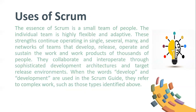The essence of Scrum is a small team of people. The individual team is highly flexible and adaptive. These strengths continue operating in single, several, many, and networks of teams that develop, release, operate, and sustain the work and work products of thousands of people. They collaborate and interoperate through sophisticated development architectures and target release environments. When the words develop and development are used in the Scrum Guide, they refer to complex work such as those types identified above.